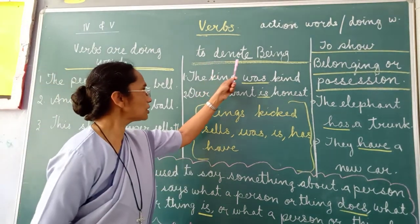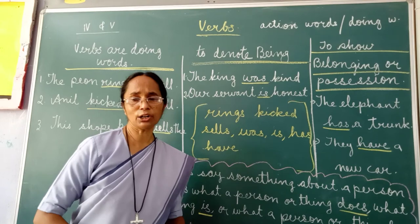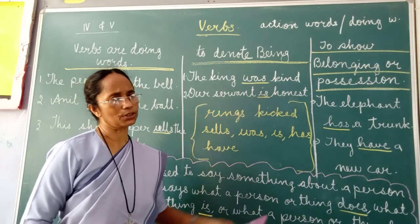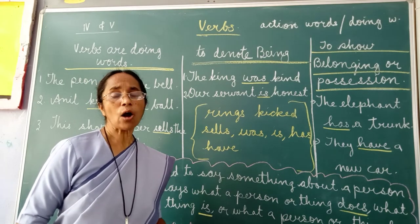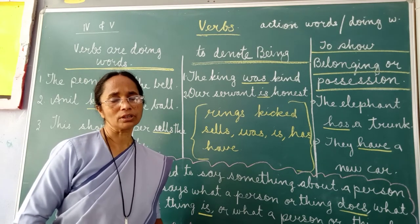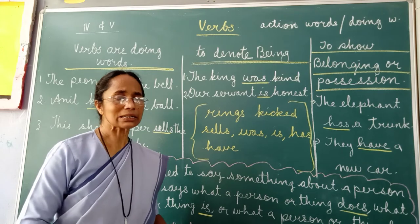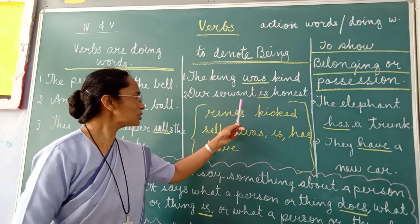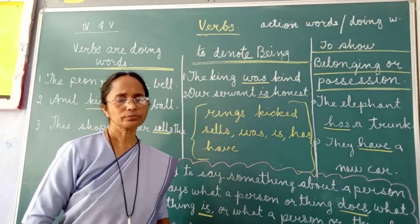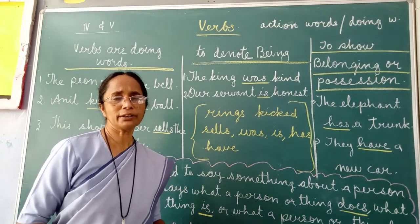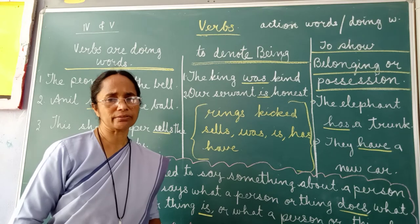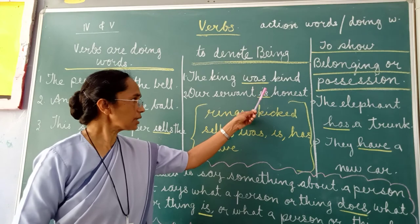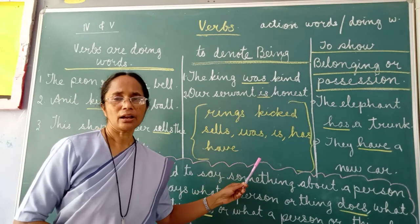Also, verbs denote being. Now we look at this example. The king was kind. How was the king? The king was kind — it is telling something about the king. So the word was. Our servant is honest. What kind of a person is our servant? Our servant is honest. So was and is — they are verbs.